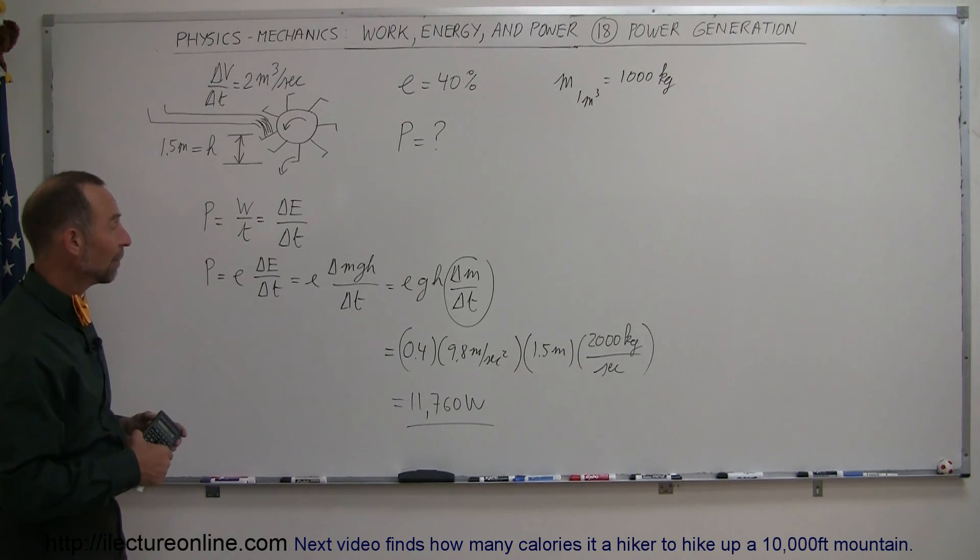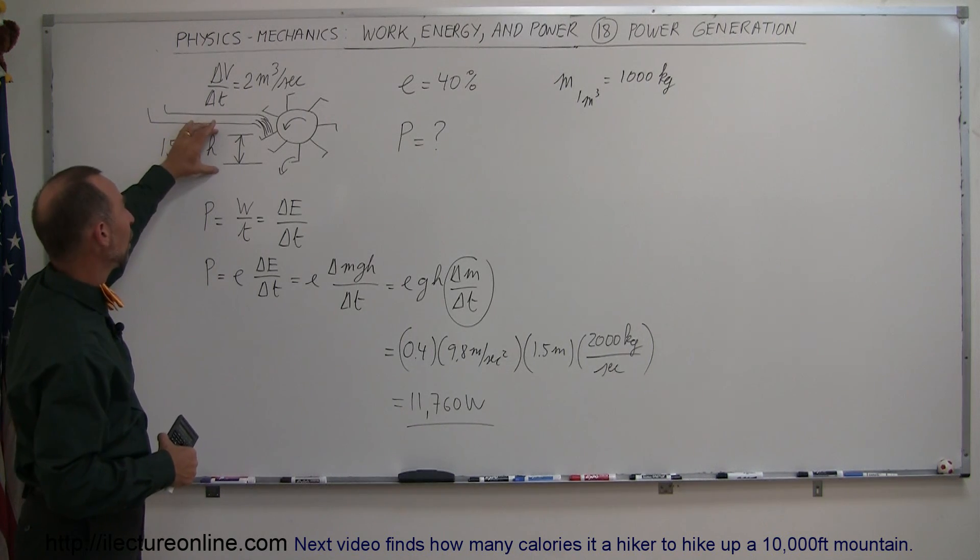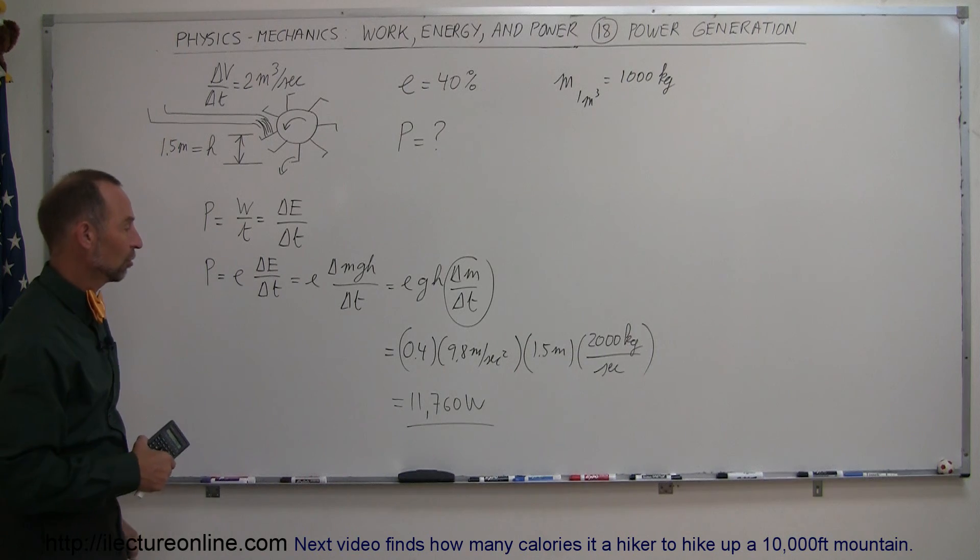So that's how we find the power output of a power generating system. And again, we're using the potential energy of water to convert it to electricity or to power.